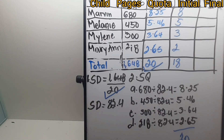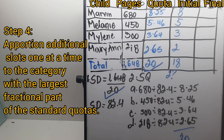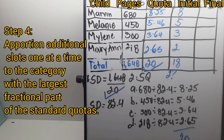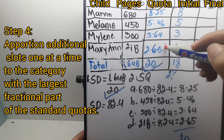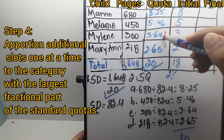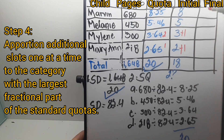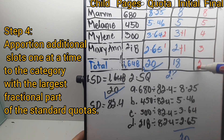We are not yet at a fair distribution of candy — there are two slots missing. Step four: apportion additional slots one at a time to the categories with the largest fractional parts. The largest fractional part is 0.65, and the next largest is 0.64. So we add one to those two categories. The final apportionment is 8, 5, 4, and 3, with a total of 20.